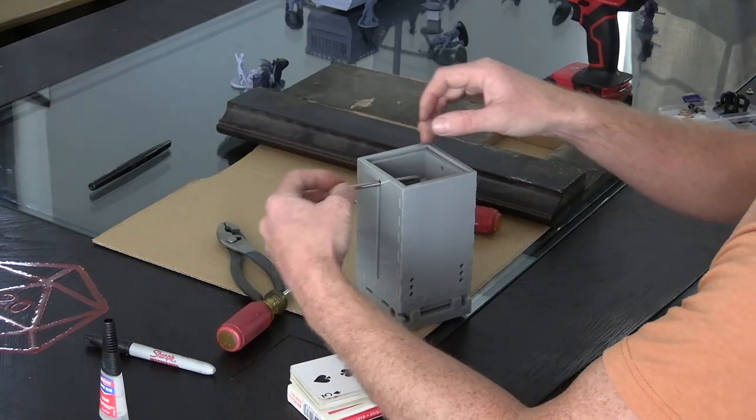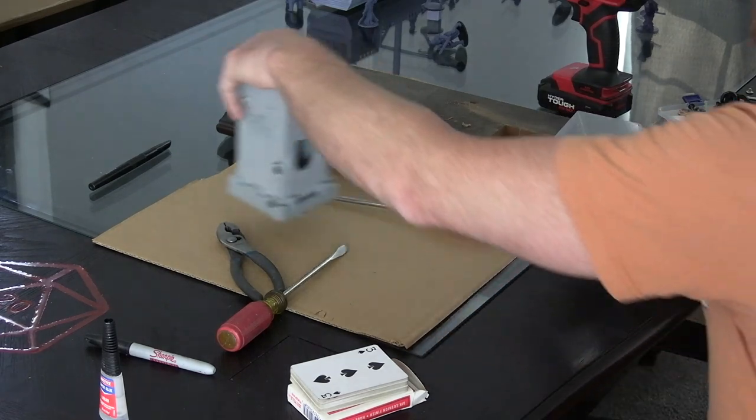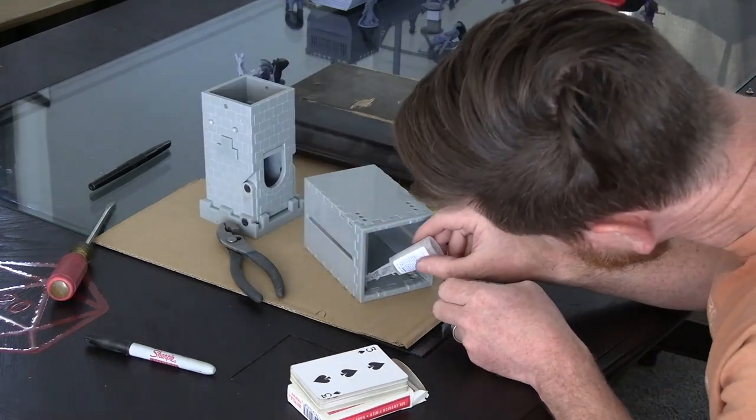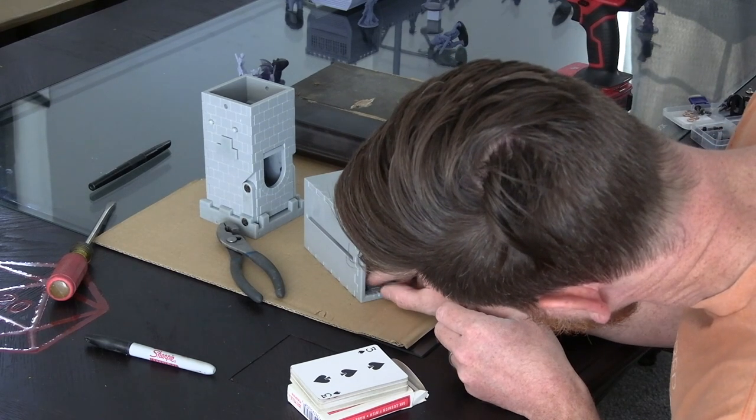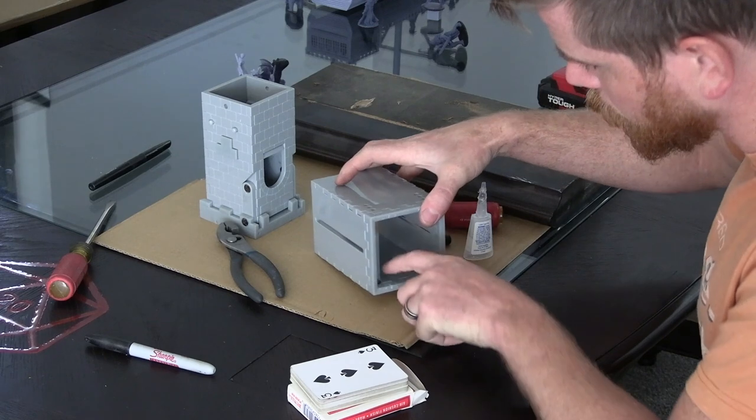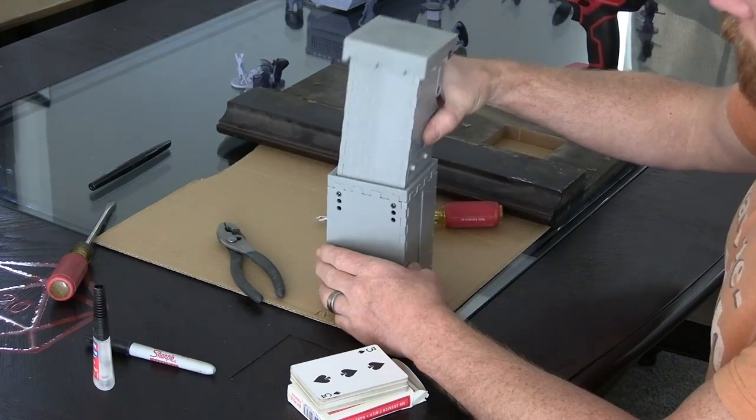After those pilot holes are drilled, I can now disassemble the tower in order to install the last four Chicago screws. A small dab of super glue will go into the appropriate countersunk hole and then I can drop the Chicago screw in and press it home. Repeat that process for all four screws and then reassemble the dice tower.